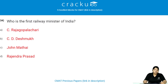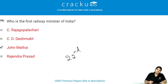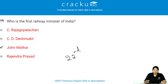Who is the first railway minister of India? The first railway minister of India is John Mathai. He was sworn in charge of the railway ministry on 22nd September 1948.